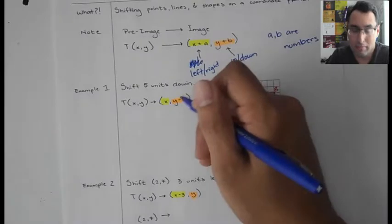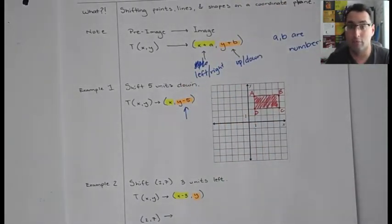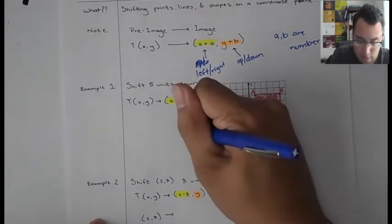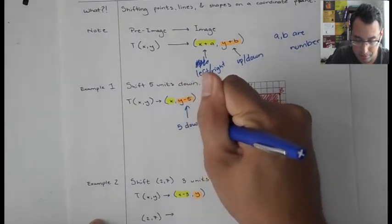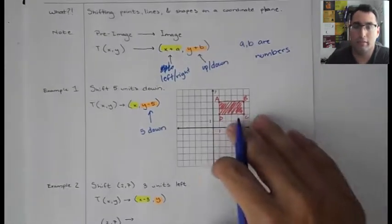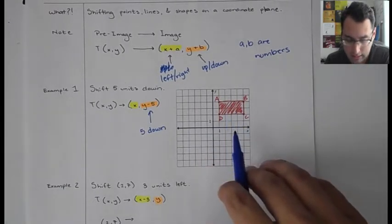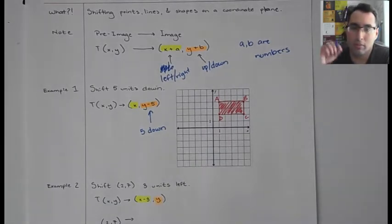This y minus five part, since that's in the y part, that's going to be shifting it vertically. And since it is negative, this means it's going to be shift five units down. Now off to the right we have a triangle. We have A, B, C, D for the points. So go ahead and draw that as we're working this out. And how we do this is just pick every single point and move it down five.